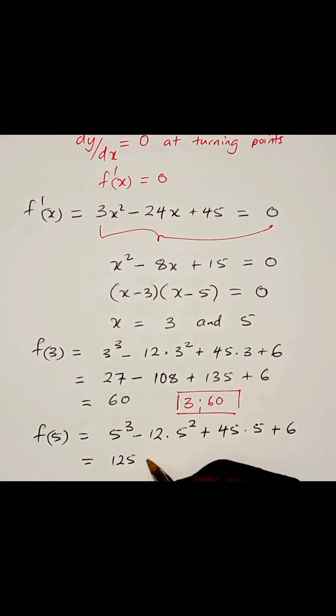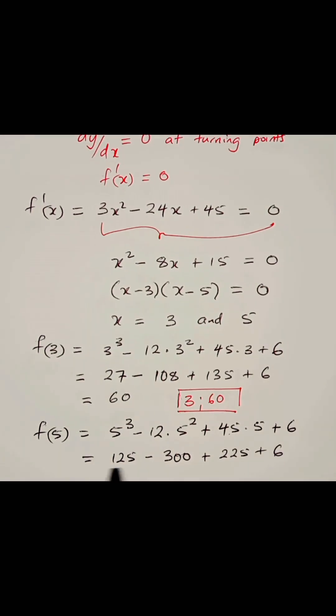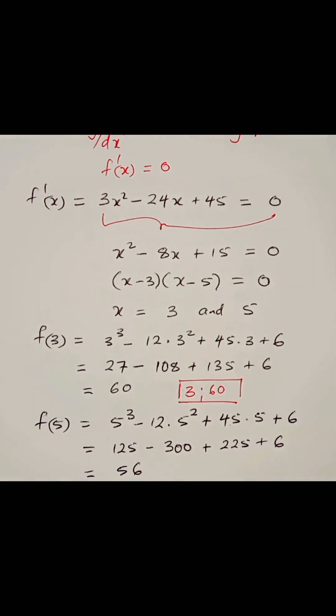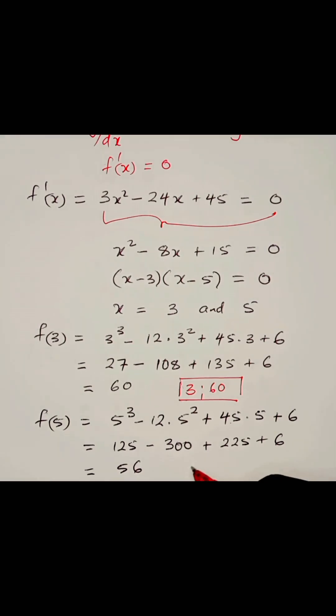We have 125 - 12 times 25, that's 300. 45 times 5, we get 225 plus 6. And if you add these up, you shall get 56. So we have another turning point, and it is at (5, 56). So we have those turning points. Thank you.